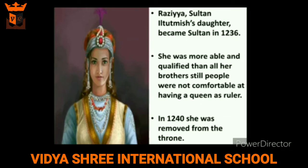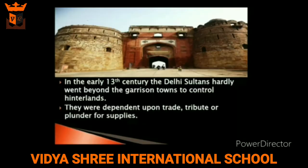Sultan Iltutmish's daughter Razia Sultan became Sultan in the year 1236. The chronicler of the age, Minhaj-i-Siraj, recognized that she was more able and qualified than her brothers. But he was not comfortable having a queen as a ruler, nor were the nobles happy at her attempts to rule independently. So she was removed from the throne in the year 1240.